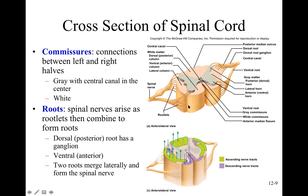Columns carry information up and down via myelinated axons — sensory axons ascend, motor axons descend. Horns are where the cell bodies for those axons are located. The posterior horn contains secondary sensory neuron cell bodies, whose axons cross over and ascend forming the posterior column. The lateral horn contains autonomic motor neuron cell bodies.